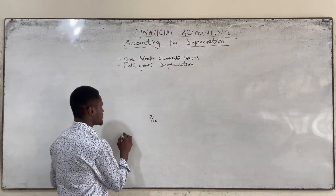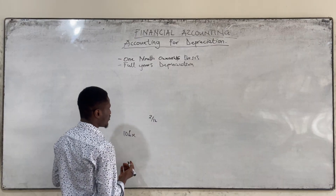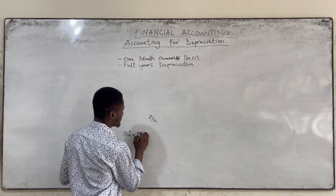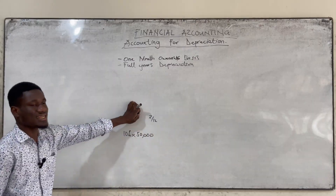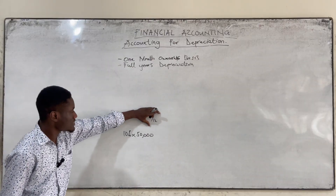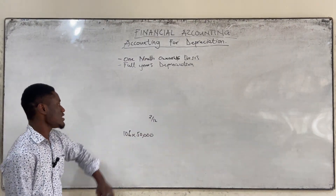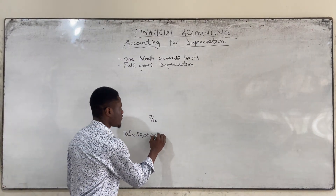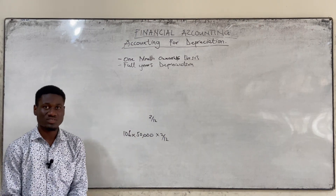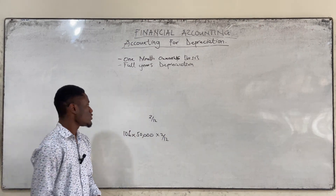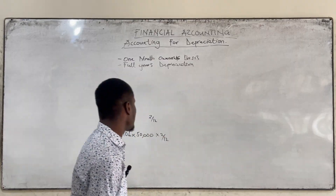So if the rate for depreciation is 10% and your cost is 50,000, we are going to consider the months the asset has been in use. For this, it's 2 over 12 because it's November to December. That's what the one month ownership basis is trying to say.